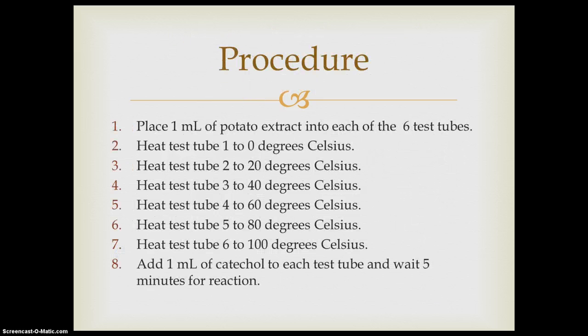Procedure. Place one milliliter of potato extract into each of the six test tubes. Heat test tube one to zero degrees, two to twenty degrees, heat test tube three to forty degrees, four to sixty degrees, five to eighty degrees, and six to one hundred degrees Celsius. And add one milliliter of catechol to each test tube and wait five minutes for a reaction.